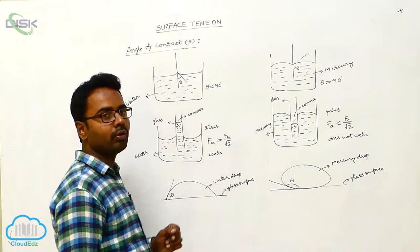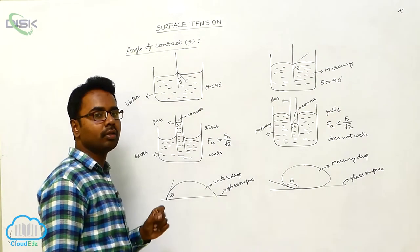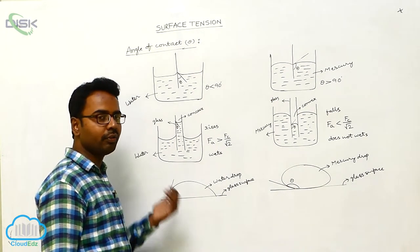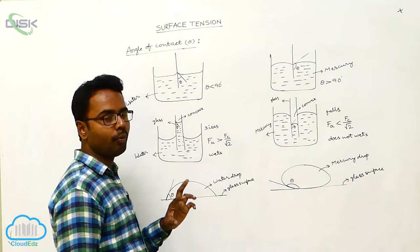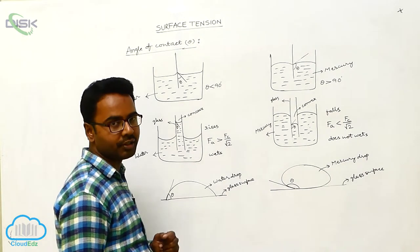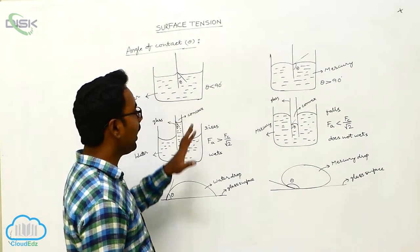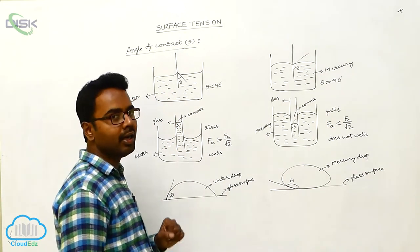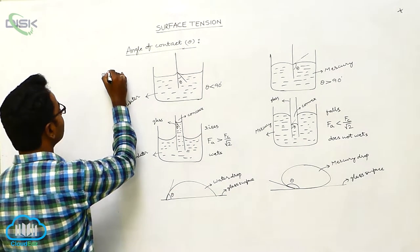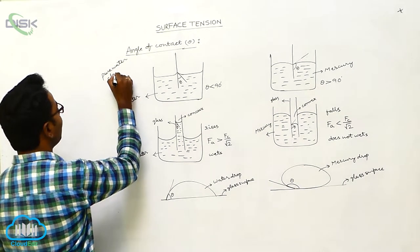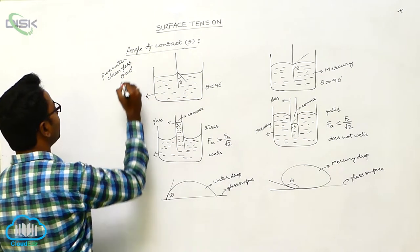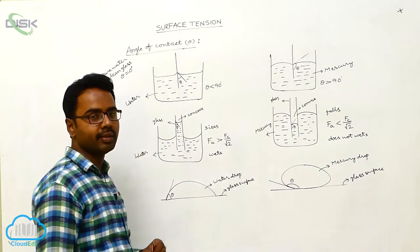The angle of contact depends on the nature of the solid and liquid surfaces in contact. For different combinations of solid and liquid surfaces, the angle of contact changes. For pure water and clean glass, the angle of contact is 0 degrees.